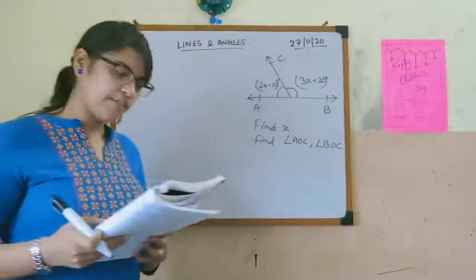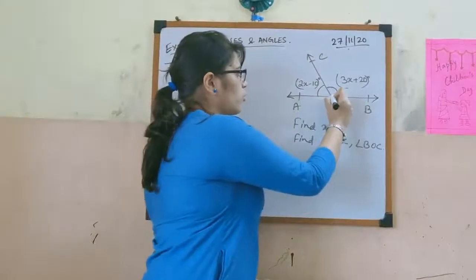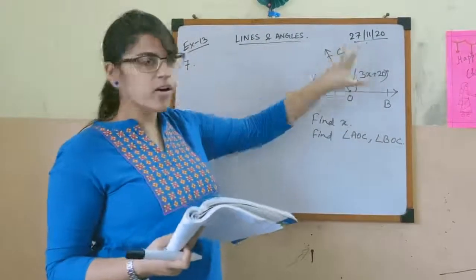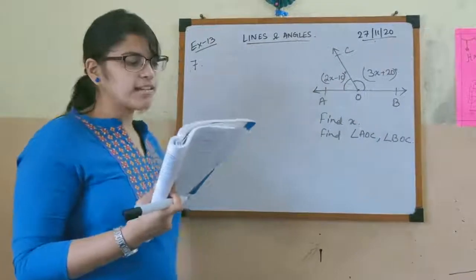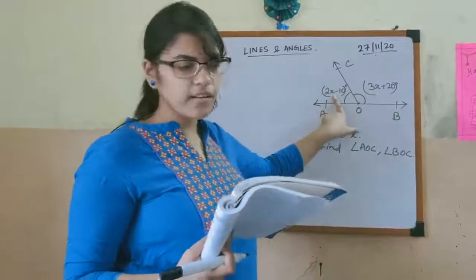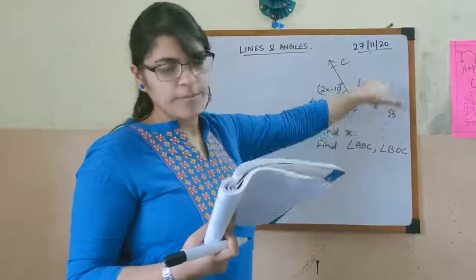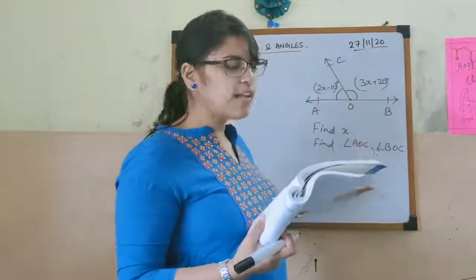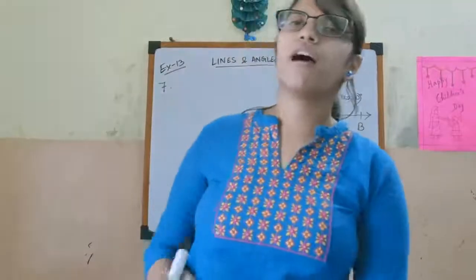Next we have sum number 7. It says: in the given figure, AOP is a straight line and the ray OC stands on it. So OC is a ray standing on line AOP. Angle AOC is 2x minus 10 degrees, and angle BOC is 3x plus 20 degrees. Find the value of x, and then find angle AOC and angle BOC.